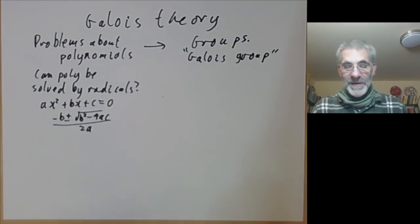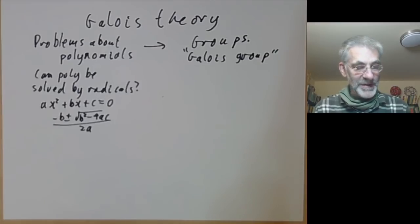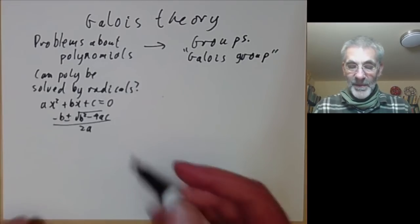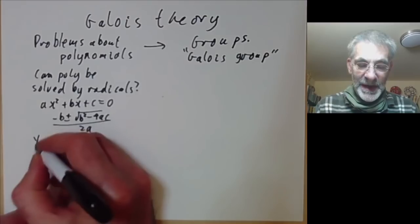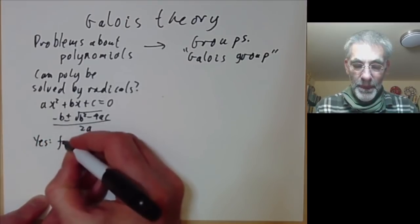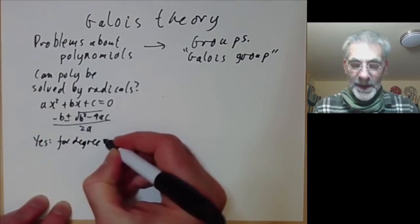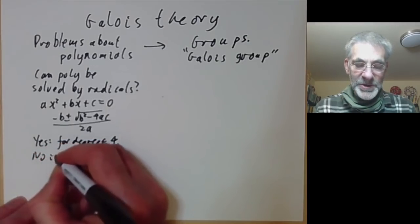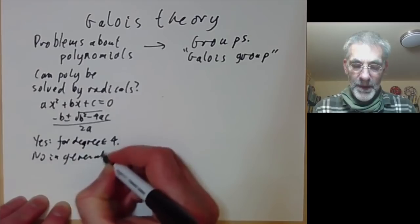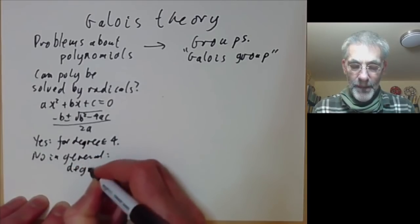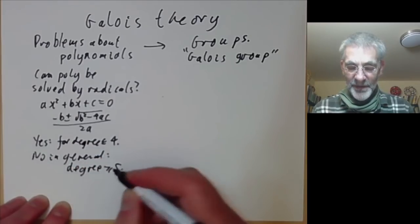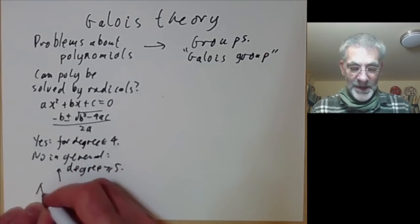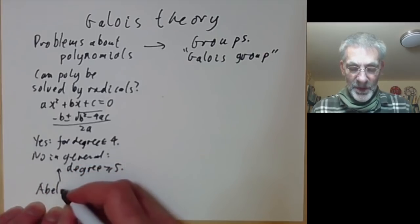You can ask can you do this for higher degree polynomials? The answer is you can do it for degree less than or equal to 4 and no in general for degree greater than or equal to 5. This is the Abel-Ruffini theorem.